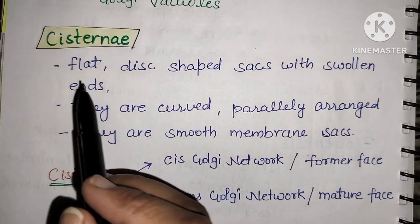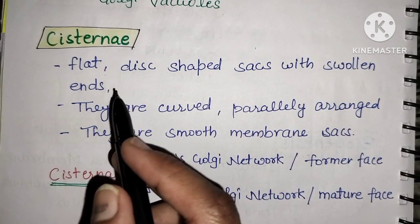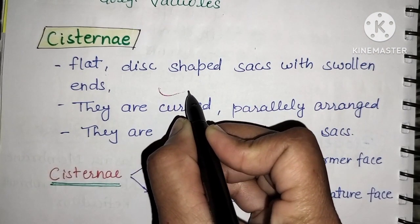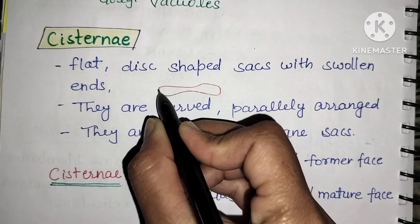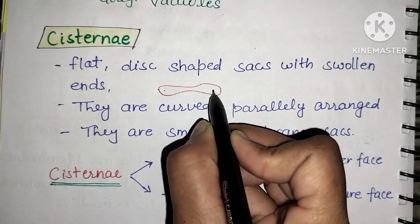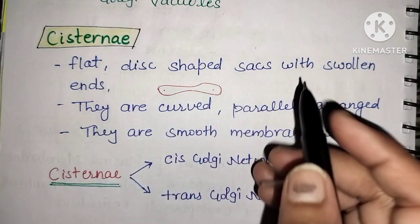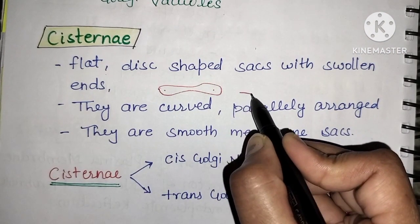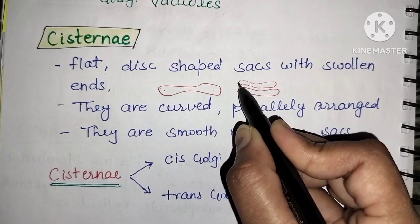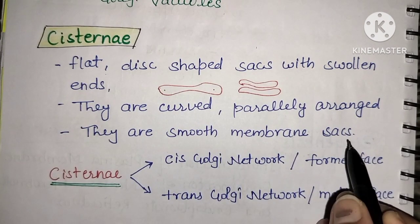The first component is the cisternae — these are flat, disc-shaped sacs with swollen ends. As shown in the diagram, the flat stacked structures are called cisternae. They are curved and parallel arranged, and have smooth membrane surfaces.